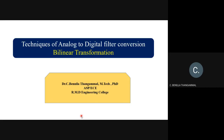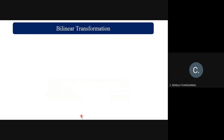Hi students, today we are going to see a technique of converting your analog filter into a digital filter — that is your bilinear transformation. We saw one more technique already, that is your impulse invariant technique. The important characteristic while converting a stable analog filter to a stable digital filter is that the poles which lie in the left half of the s-plane should be mapped inside the unit circle of the z-plane.